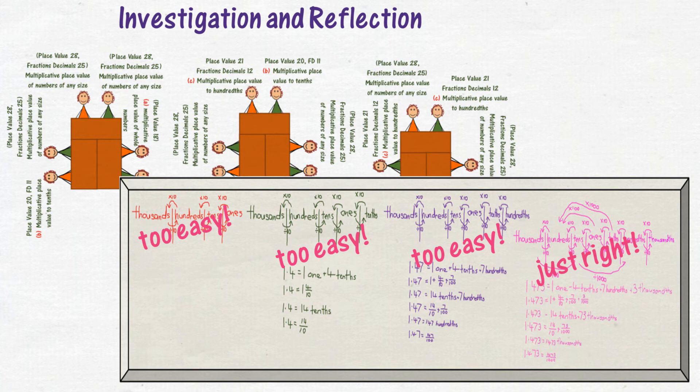Children use cards to generate numbers to investigate at their level, then the next level. They pause occasionally to explain their understanding to the child sitting next to them, regardless of that child's level of understanding.